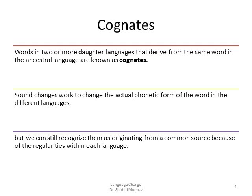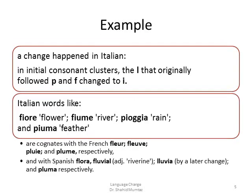Sound changes work to change the actual phonetic form of a word in different languages, but we can still recognize them as originating from a common source because of the regularities within each language. For example, a change happened in Italian in initial consonant clusters: the L that originally followed P and F changed to I.